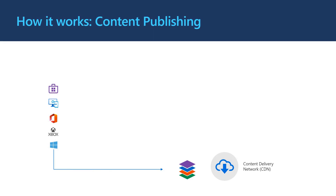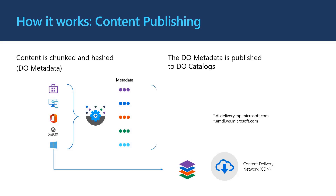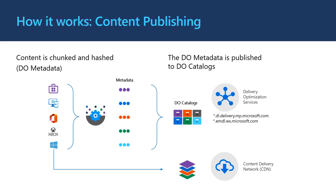Let's talk about how Delivery Optimization works, starting with content publishing. For content to become available in the Delivery Optimization service, the content needs to be processed. The content is published on the content delivery network, then it is sent for processing to create Delivery Optimization metadata. This metadata helps guarantee that content has not been tampered with and helps determine which content is available within the peer network. Once the metadata is created, it is stored in the Delivery Optimization catalog and made available to Delivery Optimization clients.